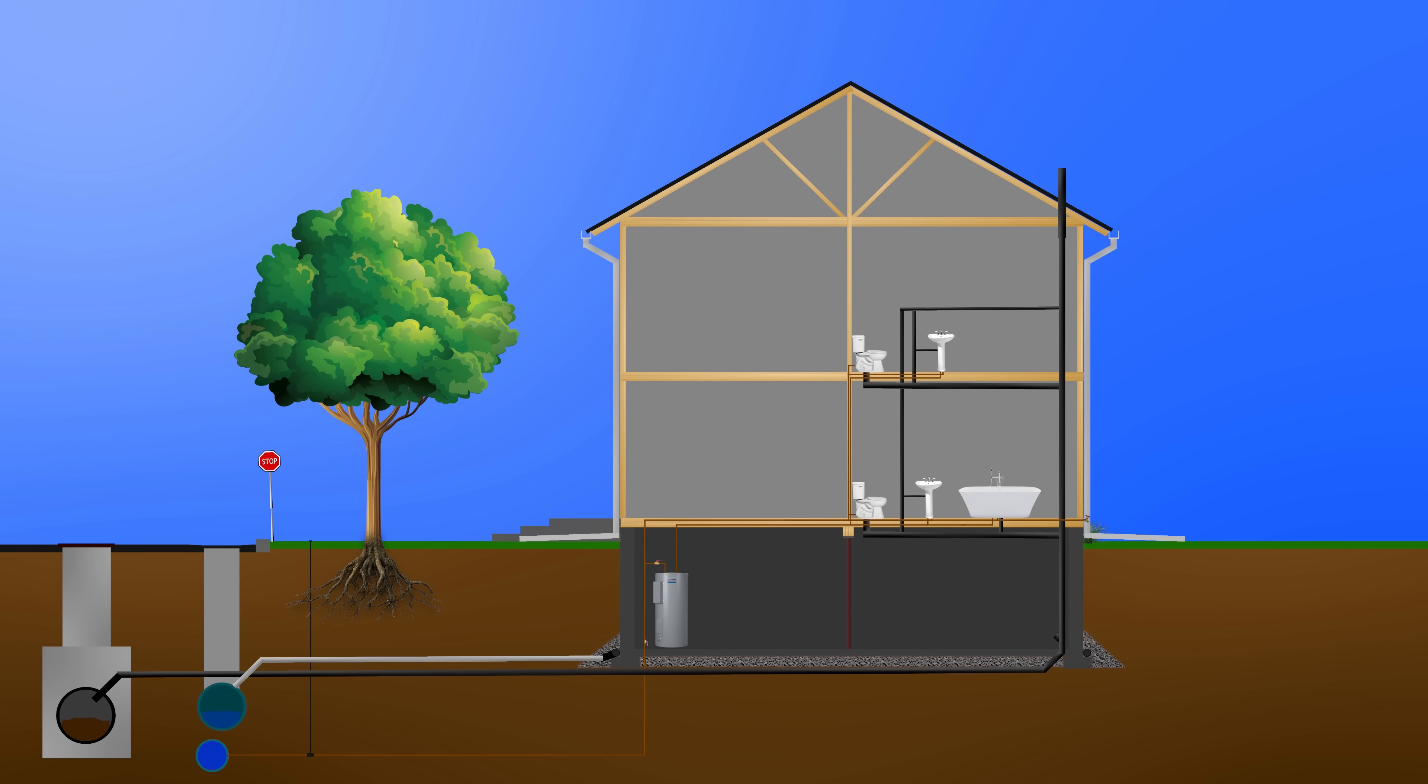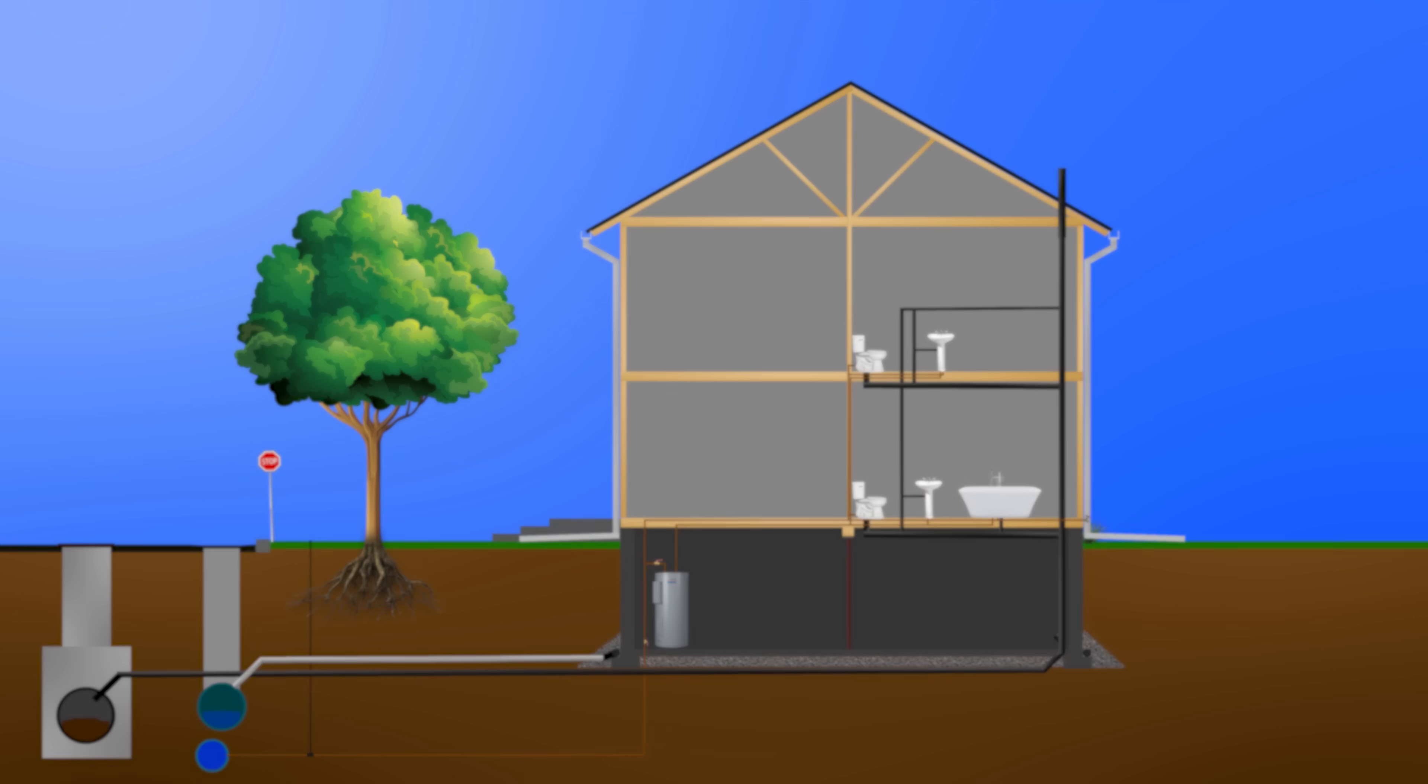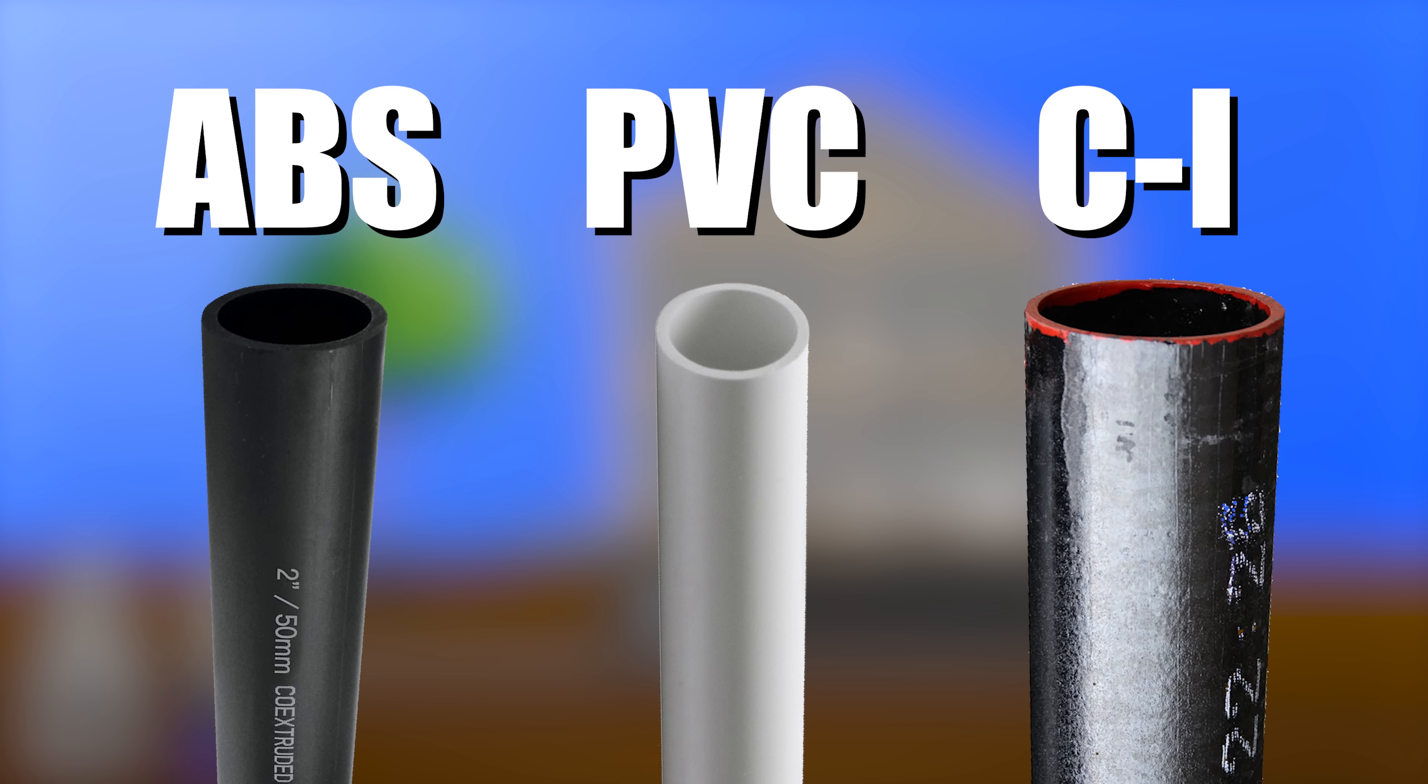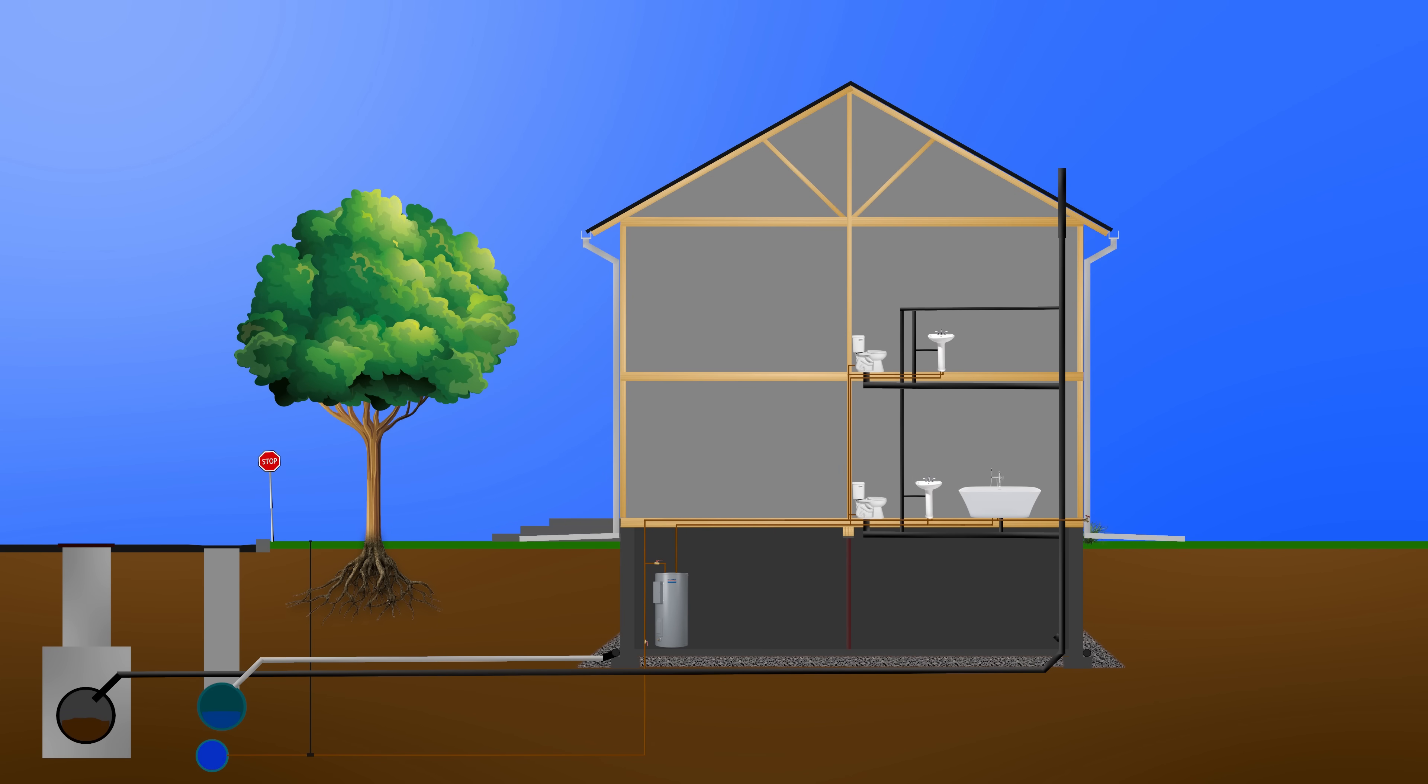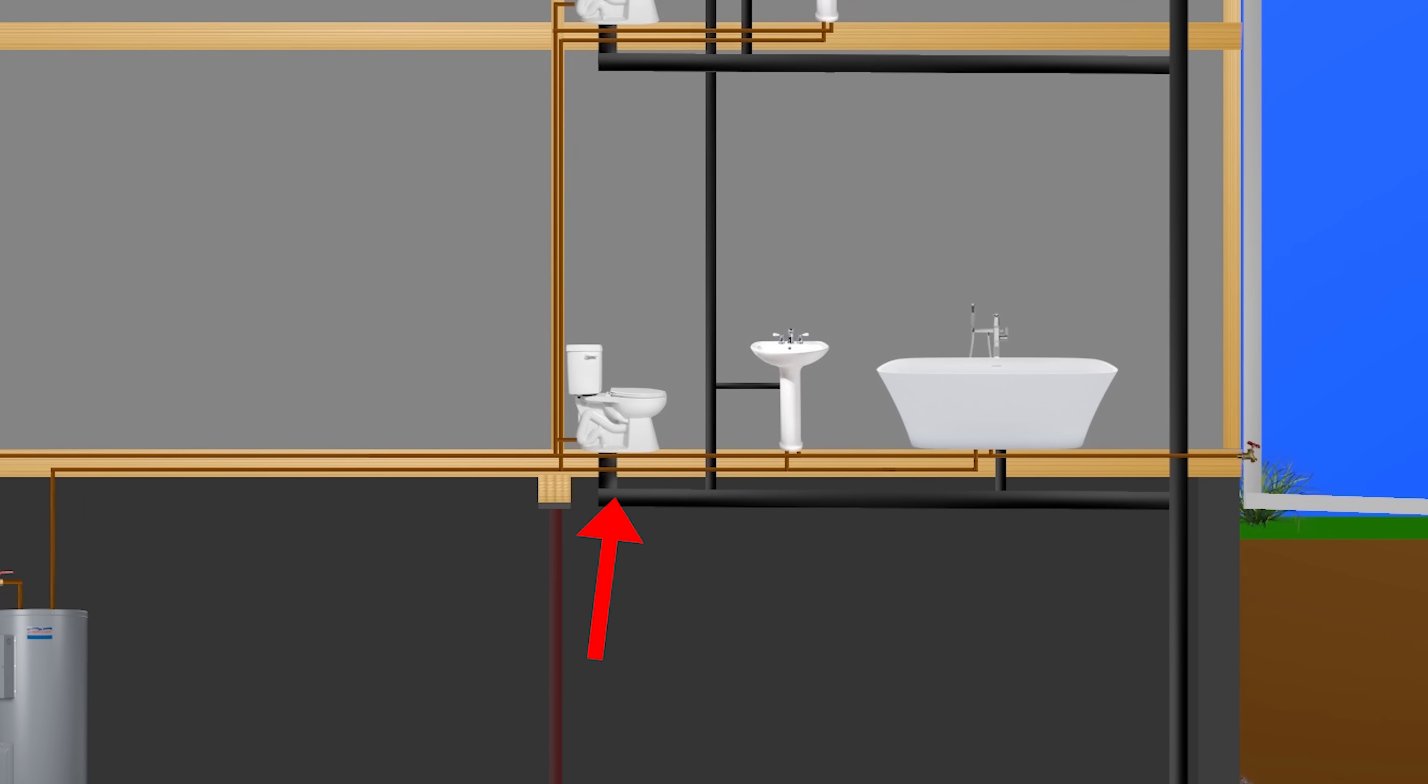Let's start off with the drains. Most homes have either ABS, PVC, or cast-iron drain pipes and vents. These pipes are connected to all the fixtures in the home such as toilets, sinks, bathtubs and showers.